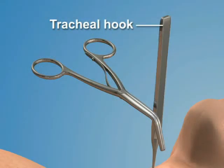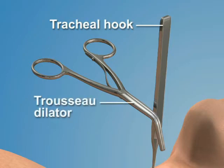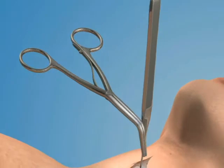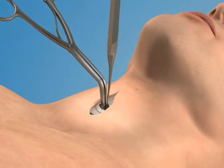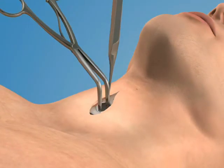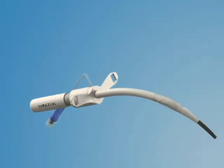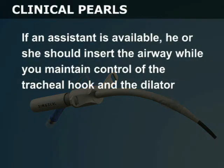While holding the hook with your non-dominant hand, use your dominant hand to place the trousseau dilator into the trachea. Spread the blades open to dilate the opening in a vertical direction. You are now ready to insert the airway into the trachea. If an assistant is available, he or she should insert the airway while you maintain control of the tracheal hook and the dilator.